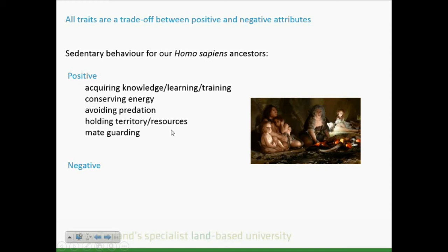There are always trade-offs between positive and negative attributes for any trait. Let's put ourselves back 50,000 years - we were likely hunting and gathering, in small kinship groups of about 120 in hunter-gatherer tribes. What were the positives of being sedentary back then? Sitting around allowed knowledge and learning - finding good fishing spots, game trails, passing on skills like how to attach a spear point. You'd conserve energy when you're not sure when your next meal is coming from. Avoiding predation - the more you move around the landscape the more likely something will eat you. And you'd hold your territory, resources, and often your mate.